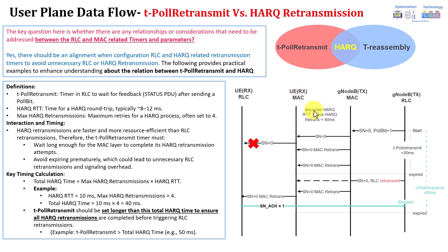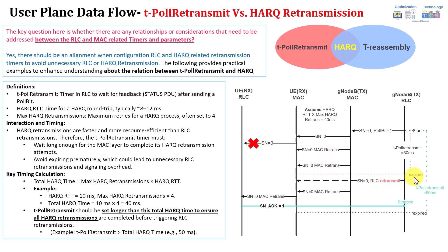Sequence number zero is being sent from the gNB MAC to the receiver MAC at the UE side through the air interface, and it is received as sequence number zero. However, this packet is being lost. So the MAC layer will try to recover the data before going to RLC retransmission. You have a maximum number of HARQ attempts. Here we have the first HARQ retransmission done, then it failed, then the second one was retransmitted — also failed. Then the T-Poll Retransmit timer expired before reaching the maximum number of HARQ retransmissions. Assume you have three maximum HARQ retransmissions: one, two, three — the first two failed.